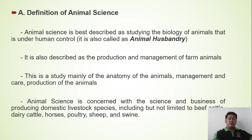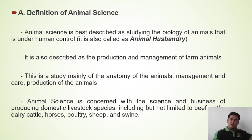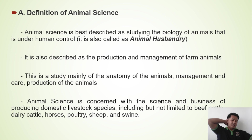Animal science is concerned with the science and business of producing domestic livestock species, including but not limited to beef cattle, dairy cattle, horses, poultry, sheep, and swine. Animal science is not just about studying the biology of animals or just about production, management, and care — it is also concerned with the business of producing domestic livestock animals.